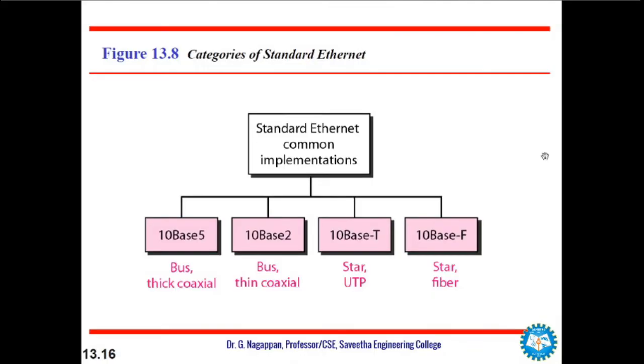Hello everyone, welcome back. Let us now see about the implementation of standard Ethernet. The standard Ethernet defines several implementations, but only four of them became popular during the 1980s. As listed below: 10Base5, 10Base2, 10BaseT, and 10BaseF. These variants differ based on medium and the medium length.